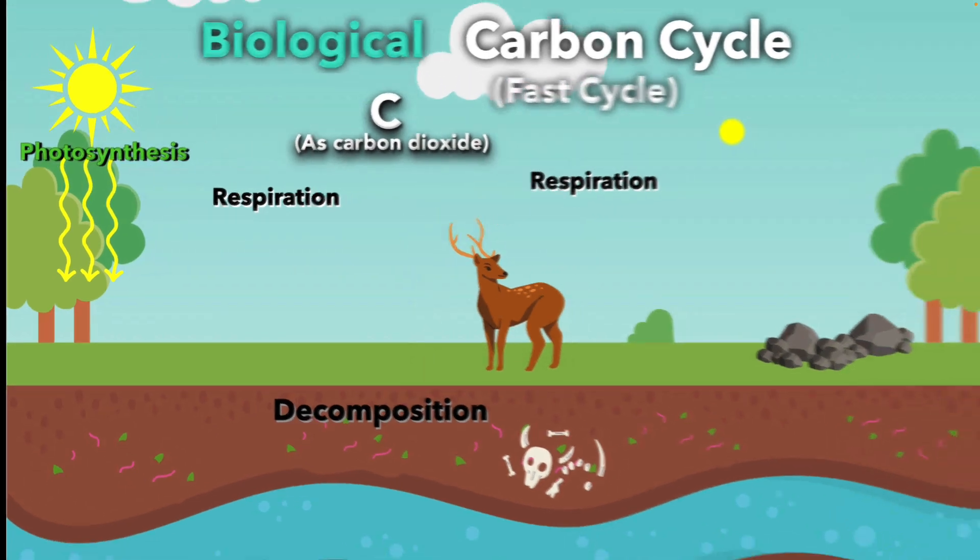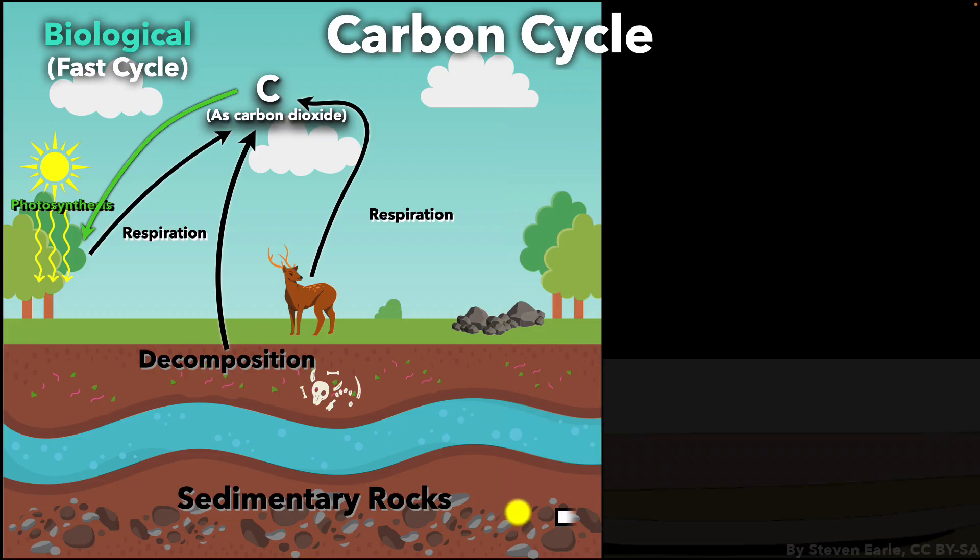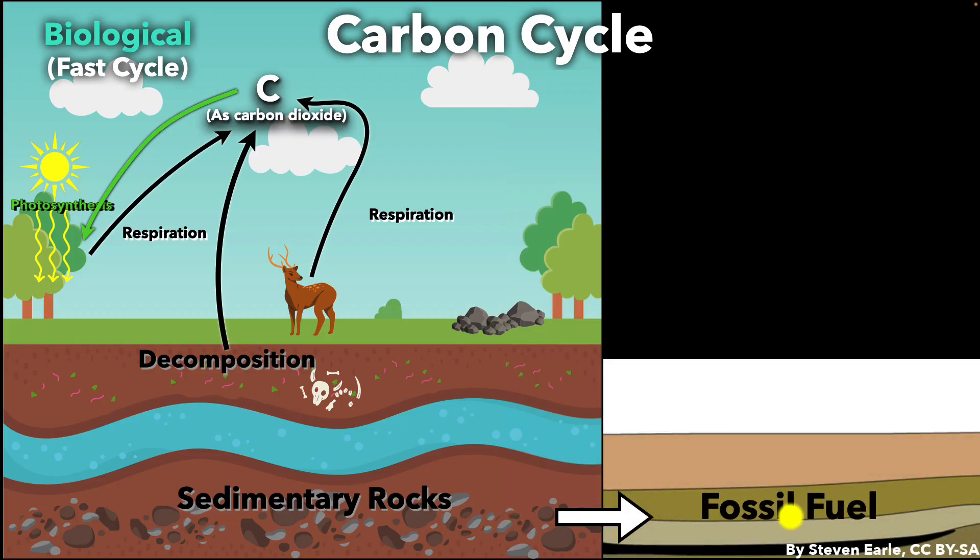But not everything breaks down right away. Some organisms and their remains don't fully decompose. Instead, they get buried under layers of soil and rock. Over millions of years, most of this buried carbon becomes part of sedimentary rocks. But in certain conditions, like very little oxygen combined with intense heat and pressure, the carbon can turn into fossil fuels like coal, oil, or natural gas. This underground carbon can stay locked away for millions of years.